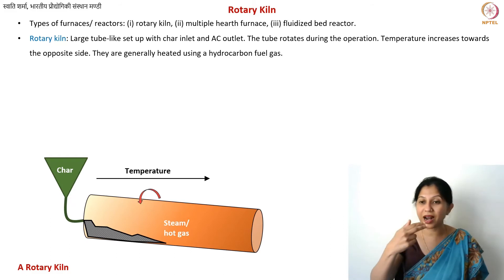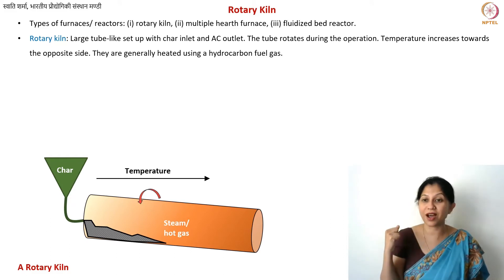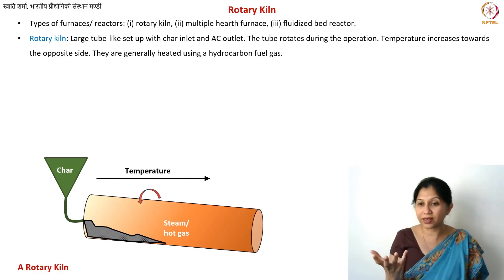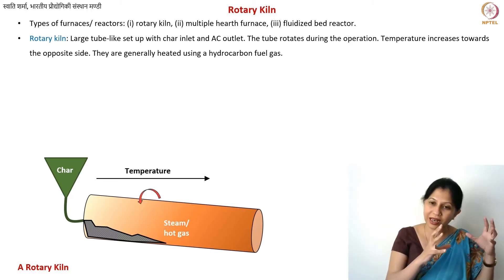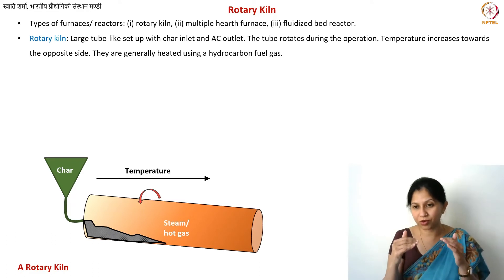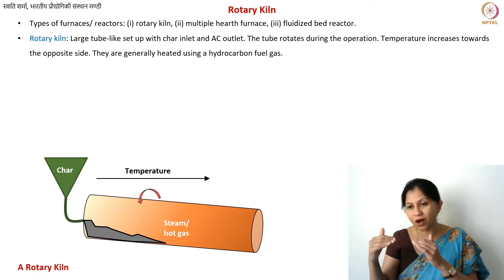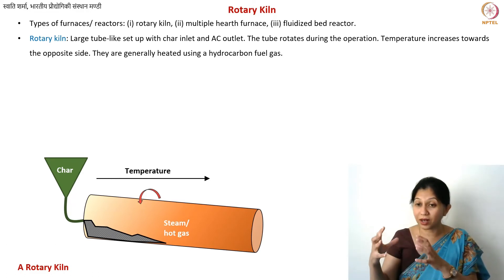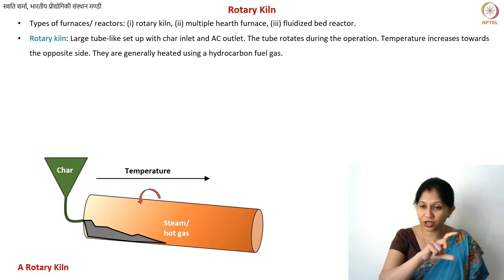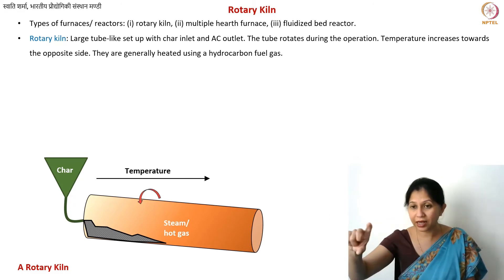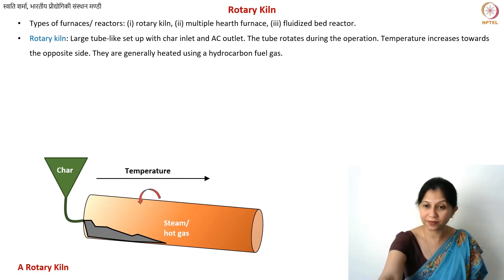The impurities are gradually removed. You can have tar-like impurities and other byproducts. You also want to make sure that you impregnate steam into it. Initial stages will remove impurities, and at some point you will also get the material impregnated with superheated steam. The temperature is increasing along the length of the furnace.